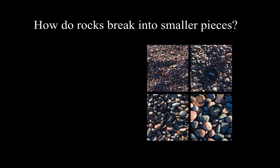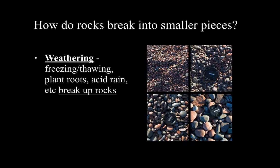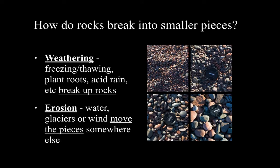How do rocks break into smaller pieces? Through weathering — weathering could be freezing or thawing, plant roots breaking them open, acid rain — basically breaking them into smaller pieces. Erosion can break things into smaller pieces too, but we generally think about erosion as moving pieces somewhere else. A glacier can carry them, water can carry them, wind will blow them places.